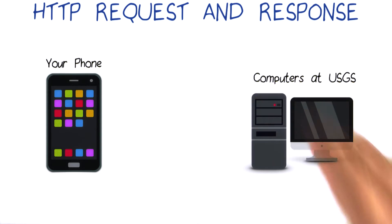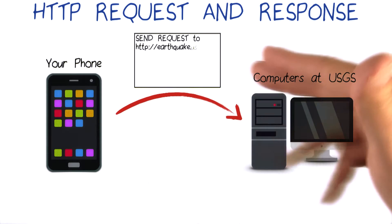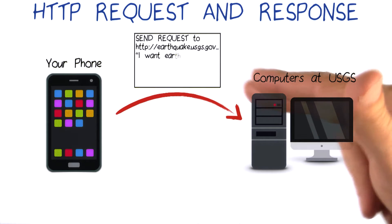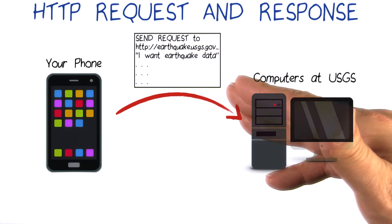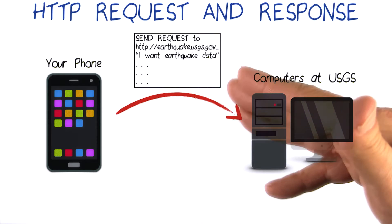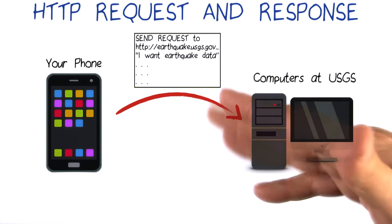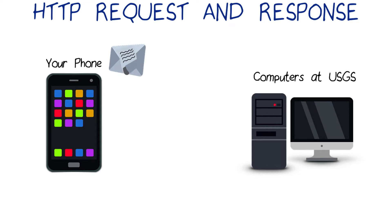Back to our networking diagram. The HTTP request will include the URL we just talked about, along with other bits of information such as what action we want to perform on the data, information about the device making the request, and more. The whole request gets packaged up together. It's like sticking a message in an envelope — the HTTP request is like an envelope with a destination and a return address.